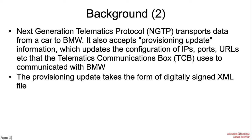Its configuration is specified via an XML file retrieved from a remote HTTP server. The configuration file is requested when the telecommunication block receives an NGTP message for provisioning updates. NGTP — the next-generation telematics protocol — transports data from a car to BMW. It also accepts provisioning update information, which updates the configuration of IPs, ports, URLs, etc.